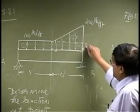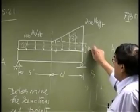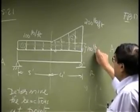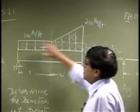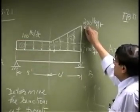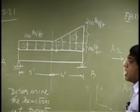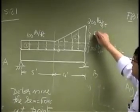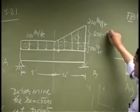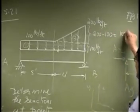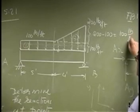This ordinate will be 100 pounds per feet. The intensity is the same as the intensity here. Then this part on the triangle can be 200 minus 100, or 100 pounds per feet.